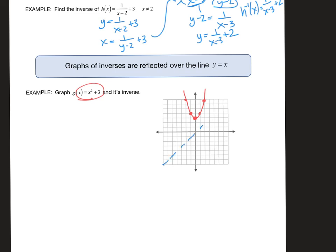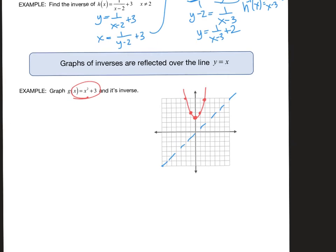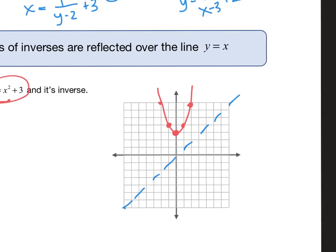Inverses are reflected over the line Y equals X. That means that the inverse should get reflected over this diagonal line. The easiest way to do this is to take each of these ordered pairs. This one is (2,7), this one is (-2,7), this one down here is (0,3), this is (1,4), and this one's (-1,4).